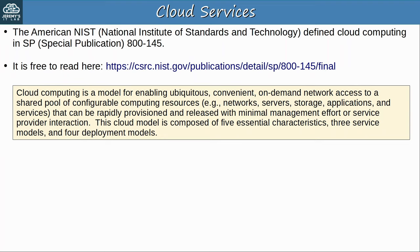Question 4: Which of the following cloud service types allows customers to use applications running on the provider's cloud infrastructure? The answer is C, SaaS, Software as a Service. In SaaS, the provider provides everything ranging from the data center infrastructure all the way to the app itself, and the customer pays to use the app.